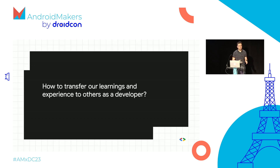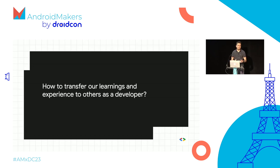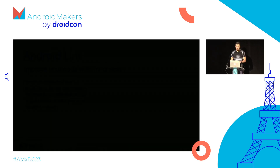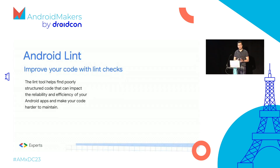We are doing lots of migrations, and I'm pretty sure all of you have lots of great learnings and experience — for example, the APIs you want to avoid, or APIs you like to call because they're more efficient and more performant. But how can you transfer this knowledge to everyone in your team or the community? There are different static analysis tools we can use.